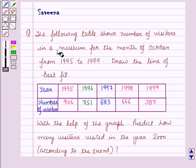Hello and welcome to the session. In this session, we will discuss a question which says that the following table shows number of visitors in a museum for the month of October from the year 1995 to 1999.